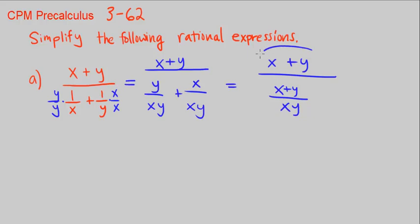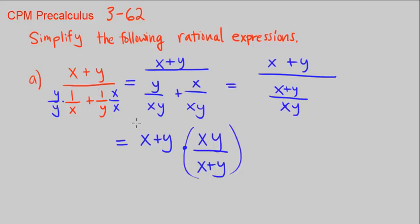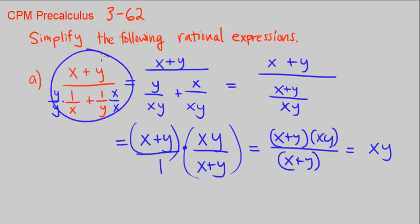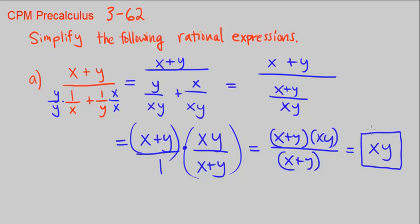Now we have the form of something divided by a fraction — it's a rational expression with one denominator. We set this equal to the numerator x plus y times the reciprocal of the denominator. The reciprocal of x plus y over xy is xy over x plus y. So that equals x plus y times xy over x plus y. We can see x plus y cancels out, so this simplifies to just xy.